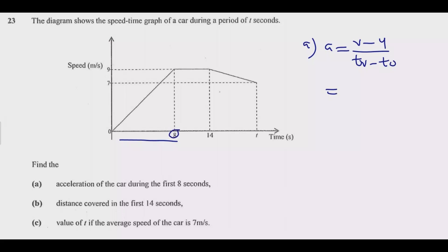So what is the final velocity? At the end of 8 seconds, the speed is 9. So we have 9 minus 0 at the starting point, over the time. The time starting from 0 to 8, so it will be 8 minus 0. So we end up with 9 over 8, which simplifies to 1⅛ meters per second squared.